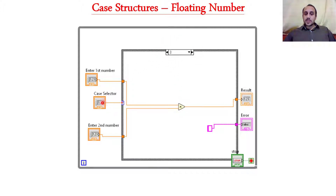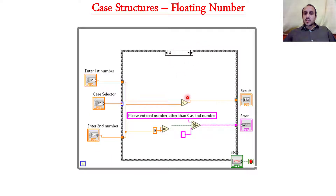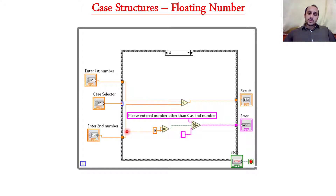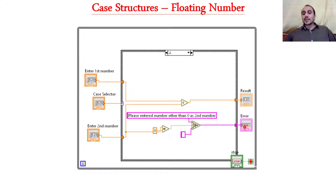This case will execute when the user enters three from the case selector input. This is the fourth case, which is the division case. Everything is the same except for this area. So now if a user enters zero as the second number, the result of division will not be calculated because you will get infinity. So if a user enters zero, this is a condition. If that condition is true — if one is traveling out of this equal sign — this constant will go out of this function and will be displayed in this error indicator. And if this is false, an empty string constant will travel and will be displayed here.